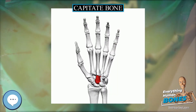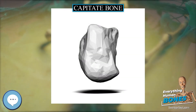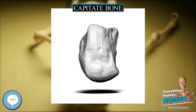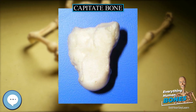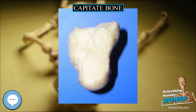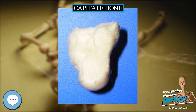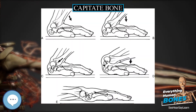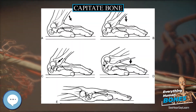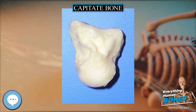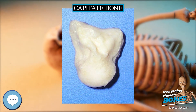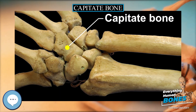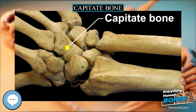If x-rays show that the capitate fracture fragments are out of alignment, surgery is indicated. A surgeon can use small compression screws or K-wires to unite the two pieces of bone. The headless compression screw has advantage over the K-wire as it provides compression across the fracture site and allows early motion. It may also be the case that the ligament between the capitate and the scaphoid bone is also injured; if so, this would be repaired at the same time.